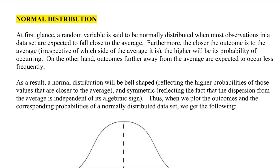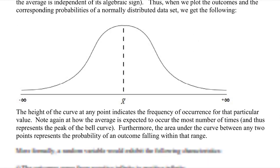Normal distribution. At first glance, a random variable is said to be normally distributed when most observations in the data set are expected to fall close to the average. So let's just jump ahead a little bit.